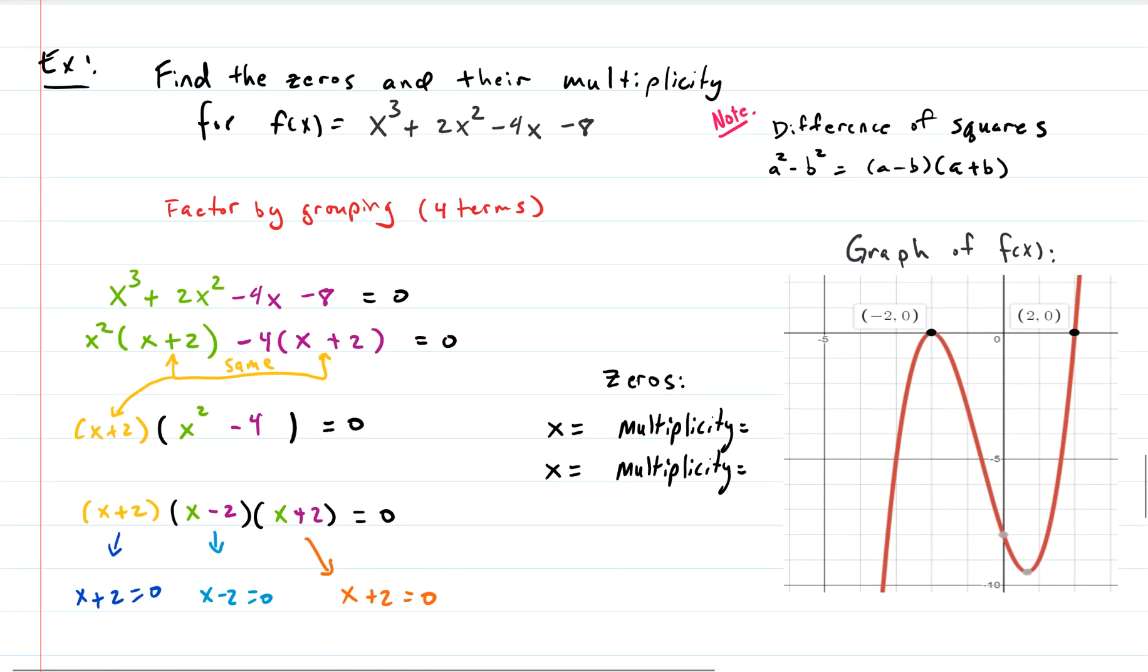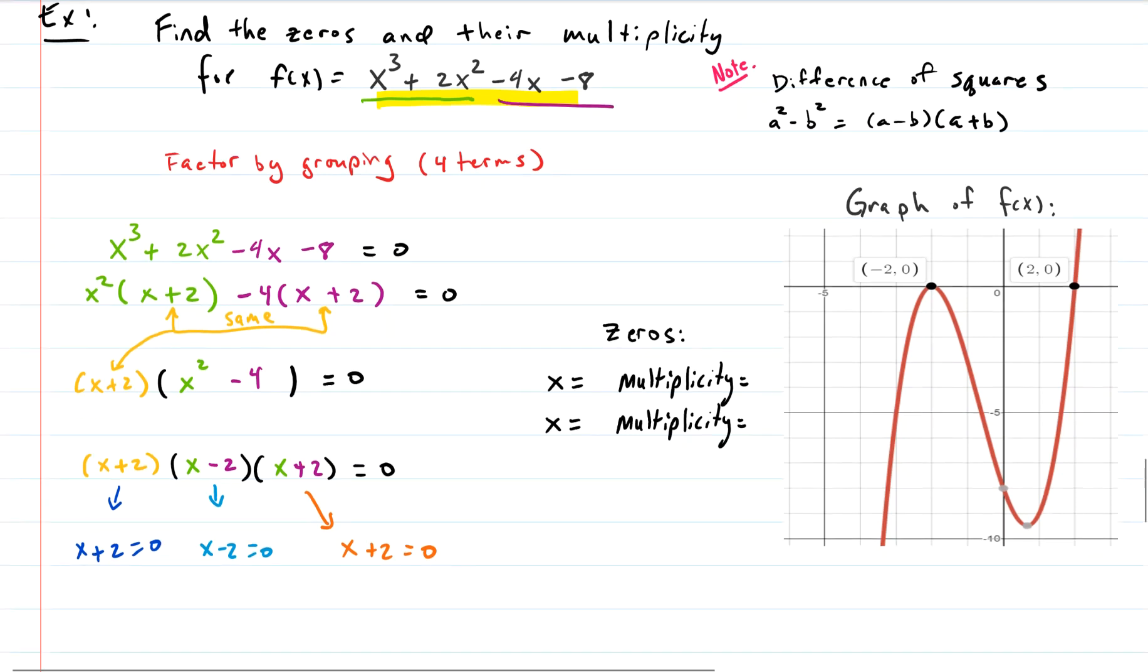So let's do another one. Here, our function is x cubed plus 2x squared minus 4x minus 8. So we've got four terms. If you want to find the zeros and their multiplicity, we've got four terms. So let's factor by grouping. If we take the first two and group those and take the second two and group those, then we have our line right here with the green and the purple. We look at all that and we say, well, what can we take out of the green? We've got an x cubed and a 2x squared. We can take out an x squared from both of those. So let's take out an x squared from both of those. What we have left is we have one of the x's left in the x cubed and we took the x squared away from the 2x squared. So we just got a 2 left over.